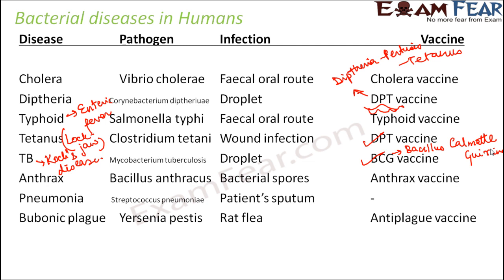The infection of bubonic plague spreads through the rat flea — fleas are small wingless jumping insects found on rats that spread the disease from rats to human beings. An anti-plague vaccine is available. Plague is also known as black death, and a couple of years ago it resulted in a huge number of deaths.